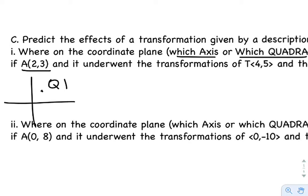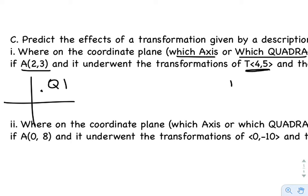And so if it transforms T<4,5>, that's plus 4 and then plus 5. In other words, it's going to be to the right 4 then up 5. That should stay solidly in quadrant 1. So it was here, now it should be like up here, so it's still quadrant 1.